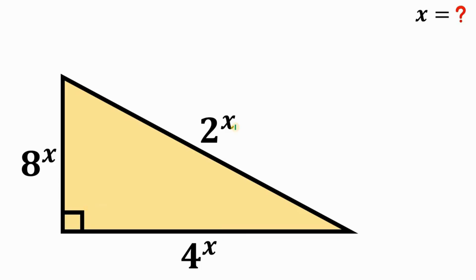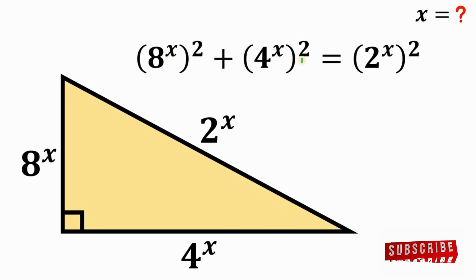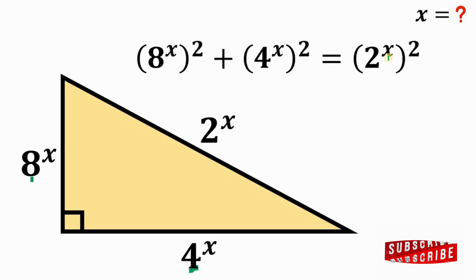Since it is a right triangle, we would use what we call the Pythagorean theorem. So we have 8 raised to the power of x, raised to the power of 2, plus 4 raised to the power of x, raised to the power of 2. The sum of these leg lengths equals the square of the hypotenuse, 2 raised to the power of x, raised to the power of 2.